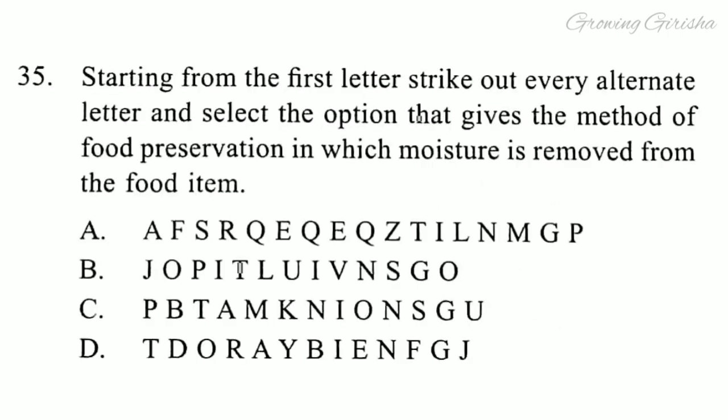Question 35. Starting from the first letter, strike out every alternate letter and select the option that gives the method of food preservation in which moisture is removed from the food item. Answer is option D.